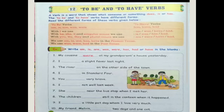Now students, it is time for the exercise which you all have to solve. Write am, is, are, was, were, has, had, or have in the blanks. The first sentence: My cousins were at my grandparents' house yesterday.